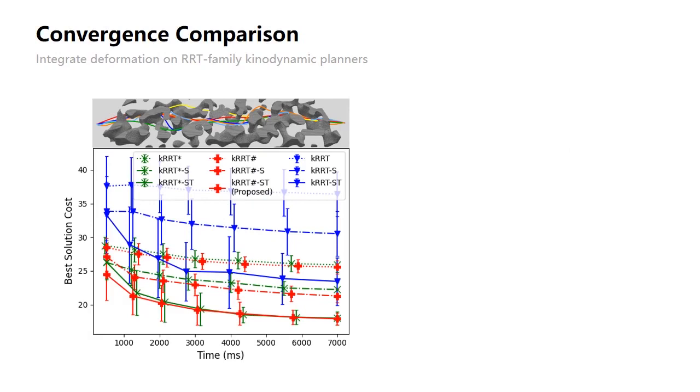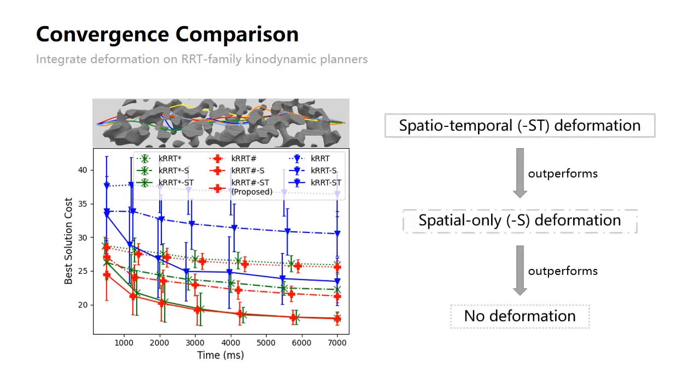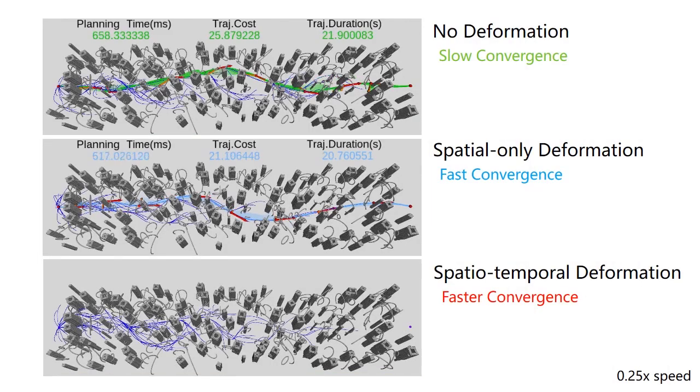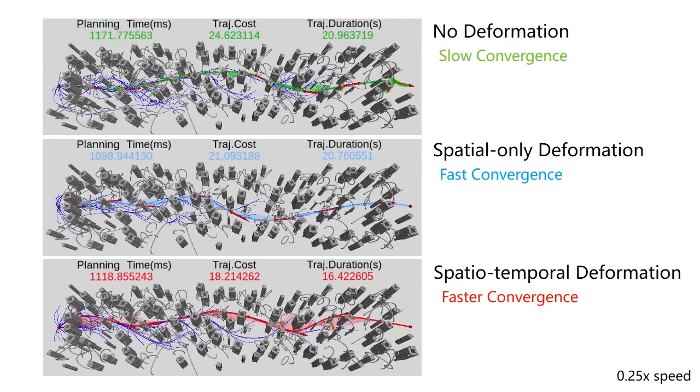We then incorporate the deformation with different RRT family kinodynamic planners. Spatiotemporal deformation and spatial-only deformation both accelerate the convergence evidently. The proposed spatiotemporal deformation further outperforms the spatial-only deforming. Here visualizes the tree-growing process and shows the improvements on convergence after incorporating the proposed deformation.